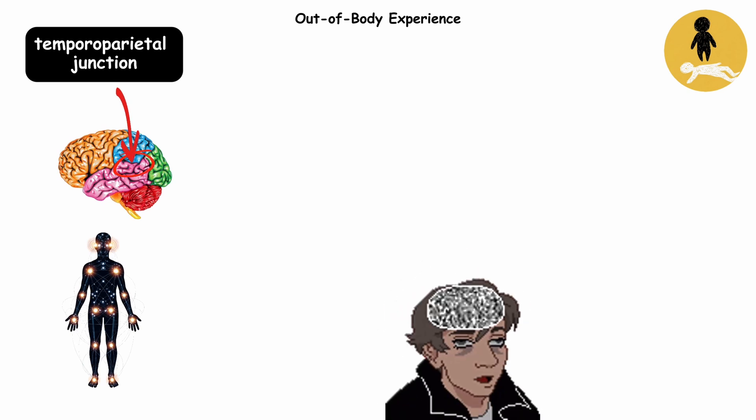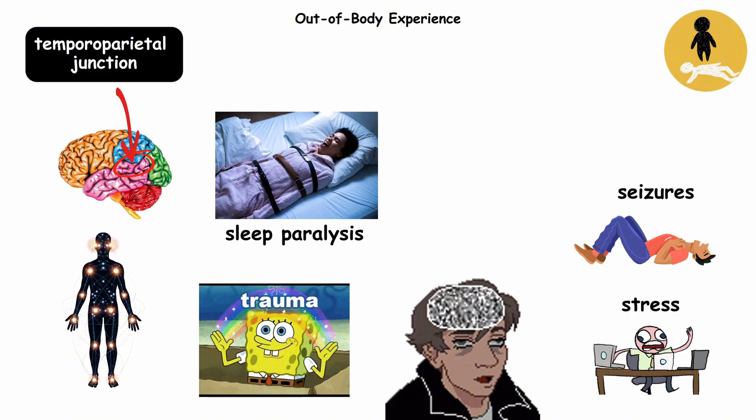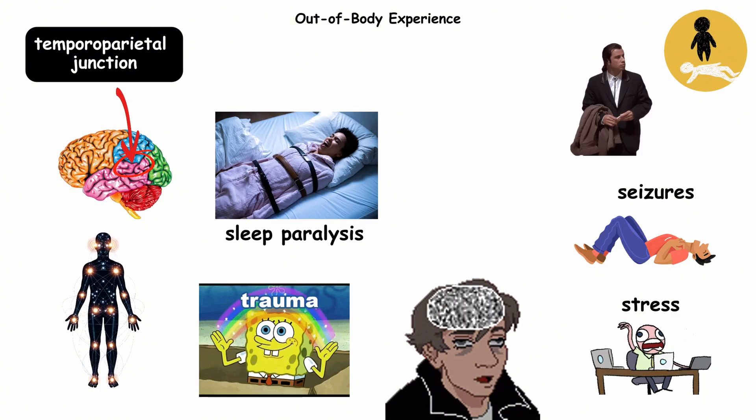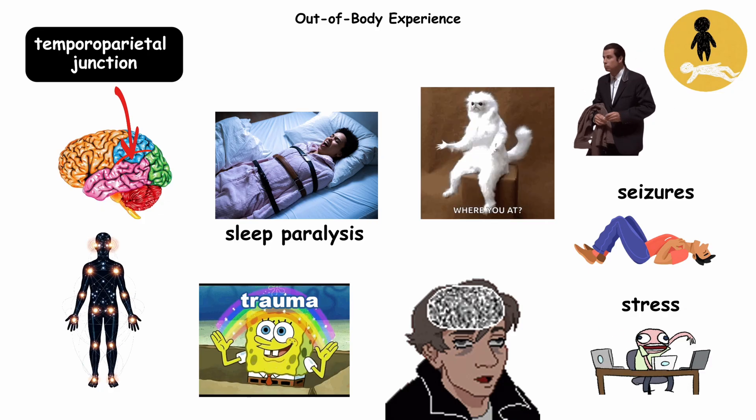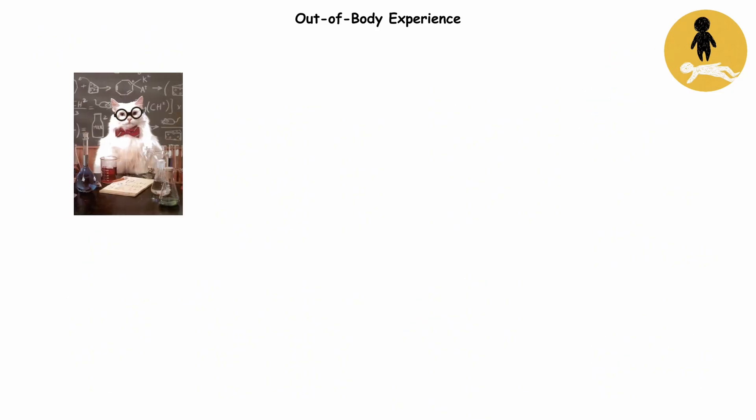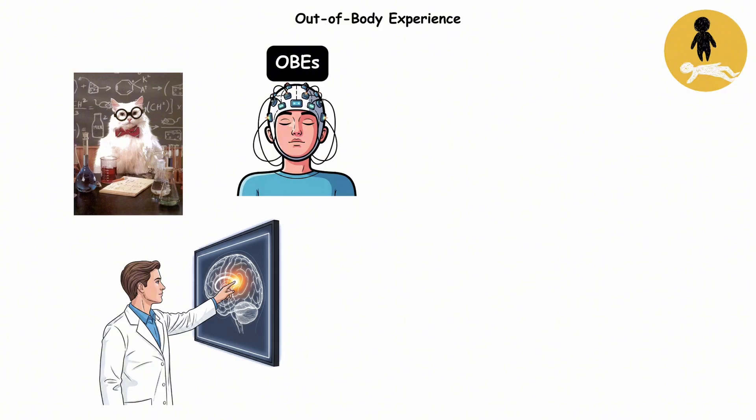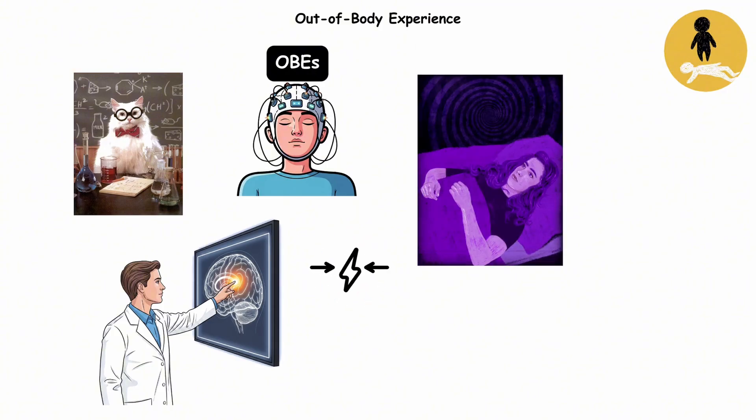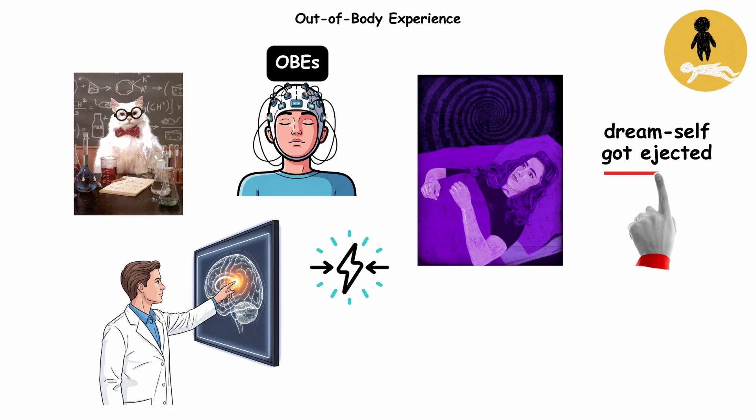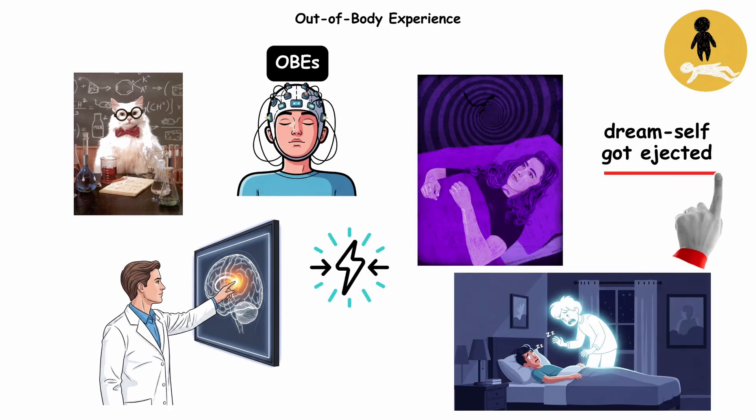But if that system errors out because of stress, seizures, trauma, or even sleep paralysis, the control tower misplaces you. Instead of putting you in your body, the system projects you somewhere else. Scientists have recreated OBEs in labs by nudging that brain region with mild electrical currents. During sleep paralysis, it can feel like your dream self got ejected, leaving you hovering while your body snoozes below.